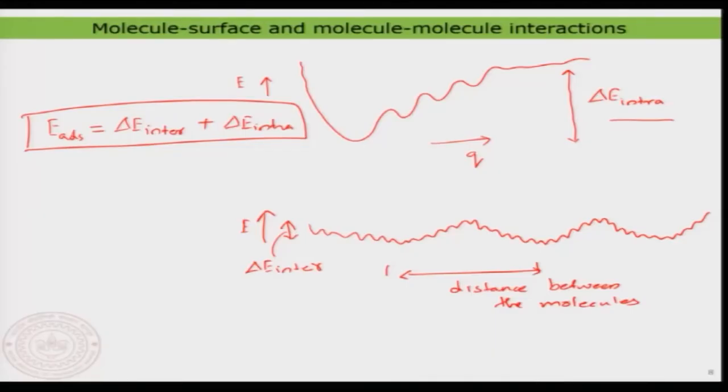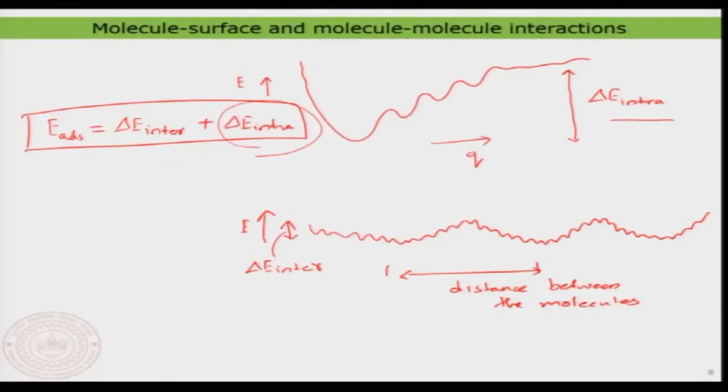At the molecule-surface interface, when it becomes much thicker — that means when you are depositing multi-layers — the influence of the surface is actually getting much more reduced and then everything is basically controlled only by delta E intra. But there you also have to see that additional factors may come into play: the molecule may also start to orient in three dimensions, not simply planar like on the surface. In general, when you make thicker layers, everything is controlled by molecule-molecule interaction and the molecule-surface interaction becomes irrelevant. That is the summary.